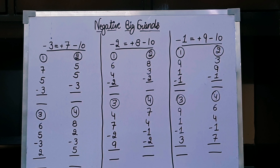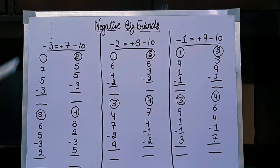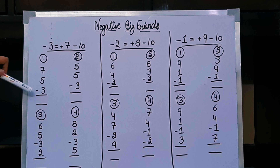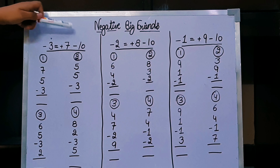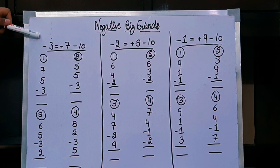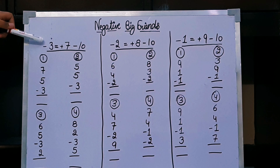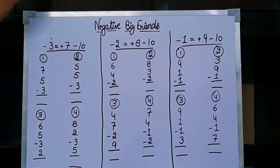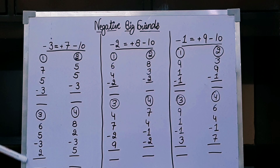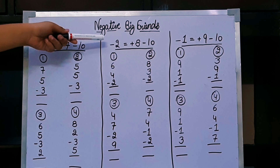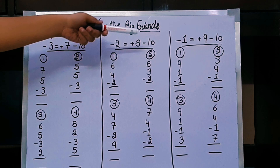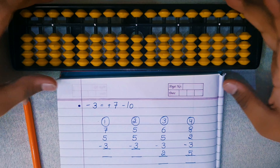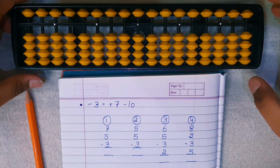Hello friends, welcome back to my YouTube channel. Today we will learn three different formulas of negative: minus 3, minus 2, and minus 1. First we will apply these formulas on abacus, and then let's get started. Here is our abacus.